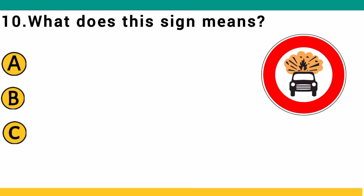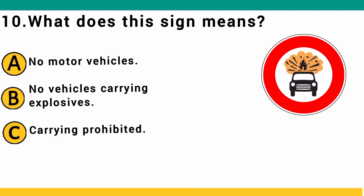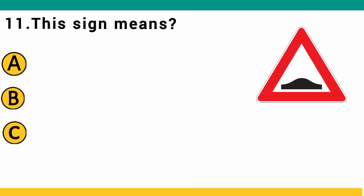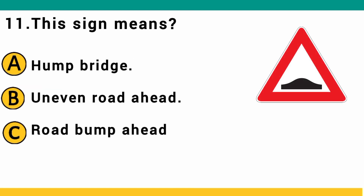What does this sign mean? A) no motor vehicles, B) no vehicles carrying explosive, or C) carrying prohibited. The correct answer is B: no vehicles carrying explosive. Carrying explosives on this roadway is prohibited.